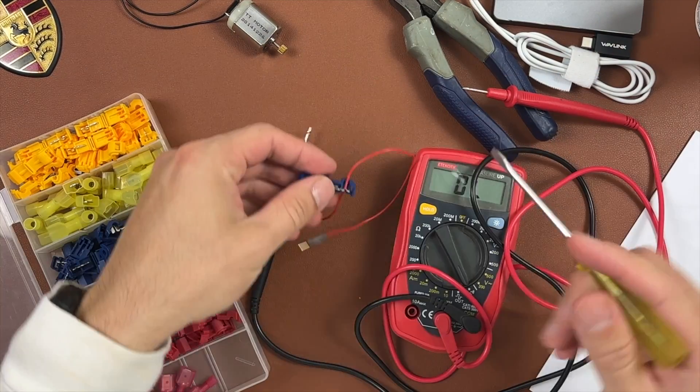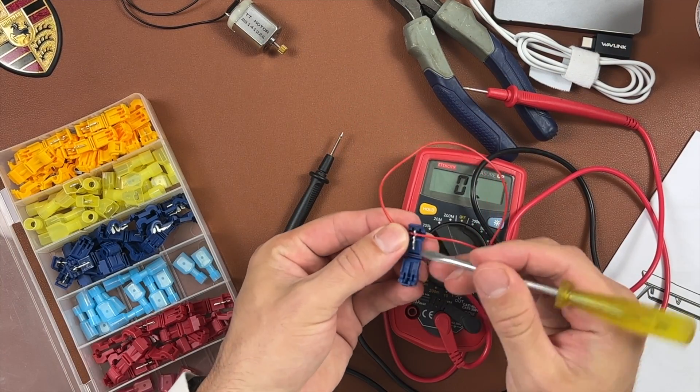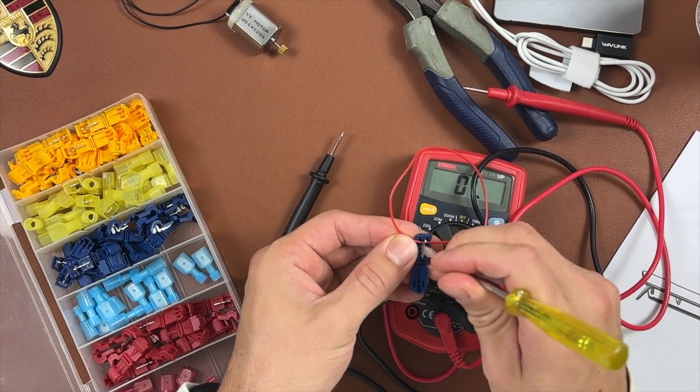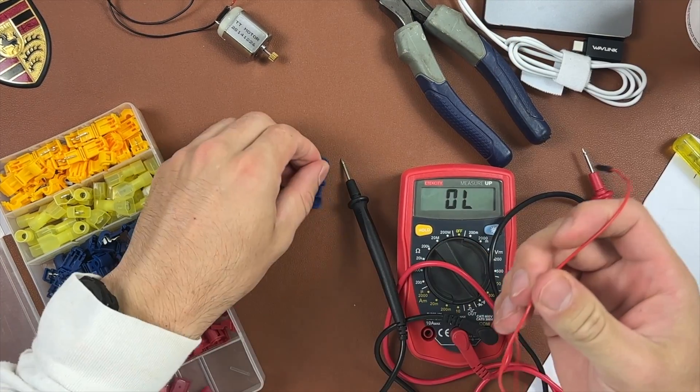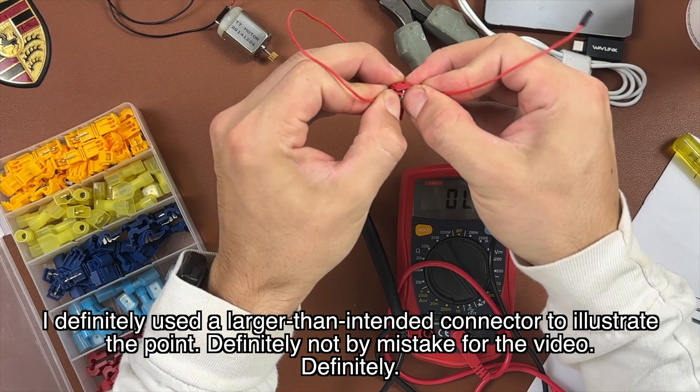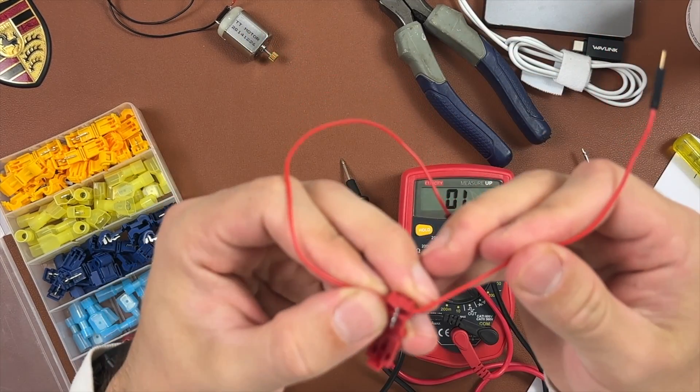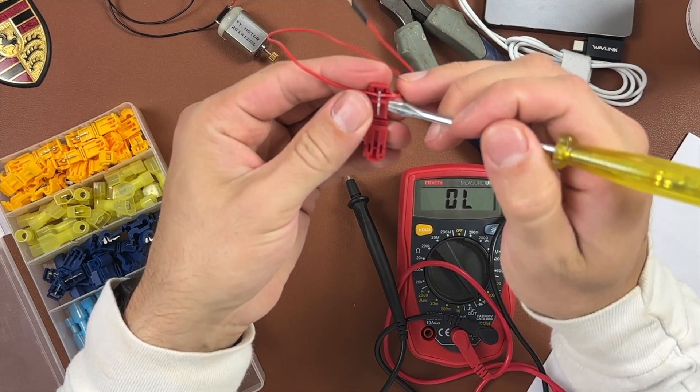If it looks like it's almost in, take a small flathead screwdriver and force it in the rest of the way, then close the connector. If it didn't even tap the wire at all, pull the wire out, be careful not to rip it, and then press down again and force it in with a small flathead screwdriver.